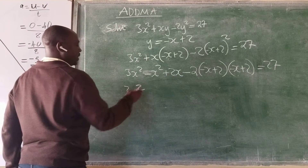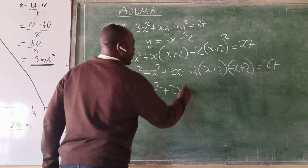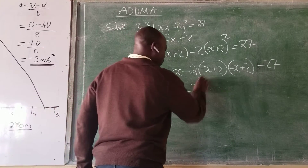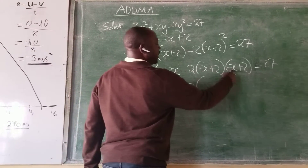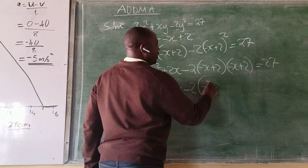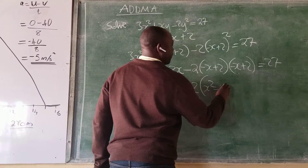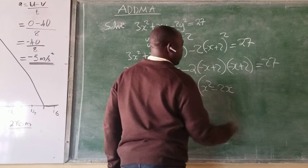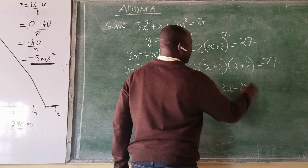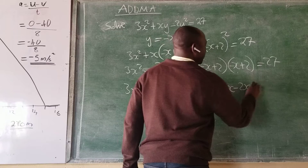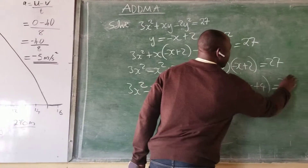We keep the first part and work on multiplying inside. So we have 3x squared minus x squared plus 2x minus 2, then expand inside: negative x times negative x gives positive x squared, negative x times positive 2 gives negative 2x, 2 times negative x gives negative 2x, and 2 times 2 gives plus 4. Close bracket, this equals 27.